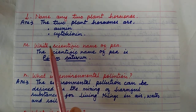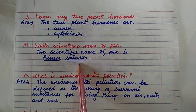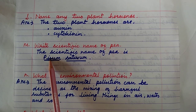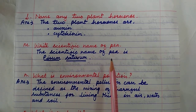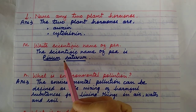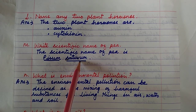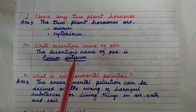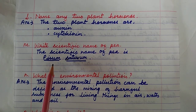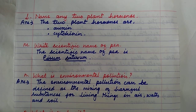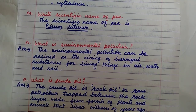Question number 1M: Write the scientific name of pea. The scientific name of pea is Pisum sativum. It must be written with a capital letter for the generic name — Pisum — and a small first letter for the specific name — sativum. Both the generic name and species name should be underlined.